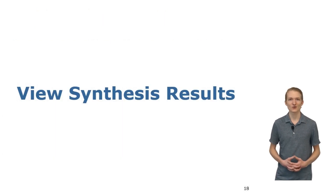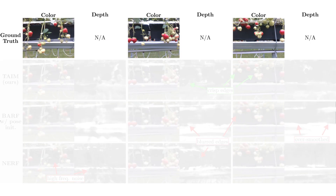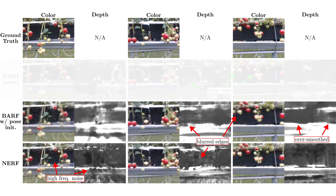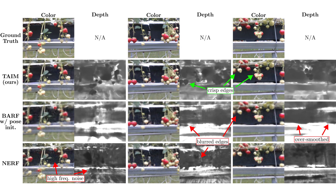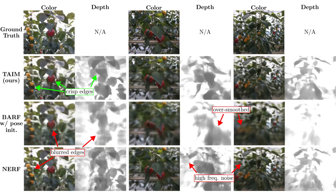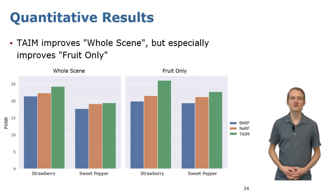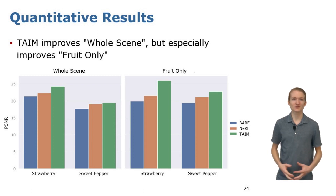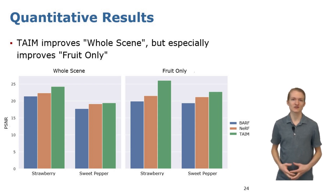We now present the results of our work compared to prior works. Here we show RGB and depth view synthesis results from training two prior works, NeRF and BARF, as well as our system, TAME, on a row of strawberry crops from an indoor greenhouse. Qualitatively, TAME results in the highest fidelity mapping with crisp edges, while BARF tends to overblur edges and NeRF is susceptible to high-frequency noise. When our system is evaluated on another crop—in this case, sweet peppers—we observe similar results. TAME's novel view renderings in both RGB and depth have more crisp and accurate edges than both BARF and NeRF. We also quantified each system's view synthesis accuracy after training. Whole scene evaluates reconstruction accuracy compared to ground truth on all pixels, whereas fruit only evaluates only fruit pixels. TAME outperforms both BARF and NeRF across all metrics, but does especially well in the fruit-only metrics due to its targeted sampling of key fruit regions of the scene.